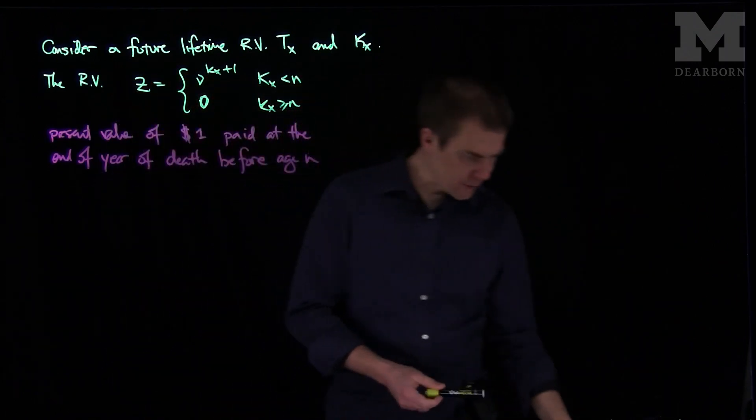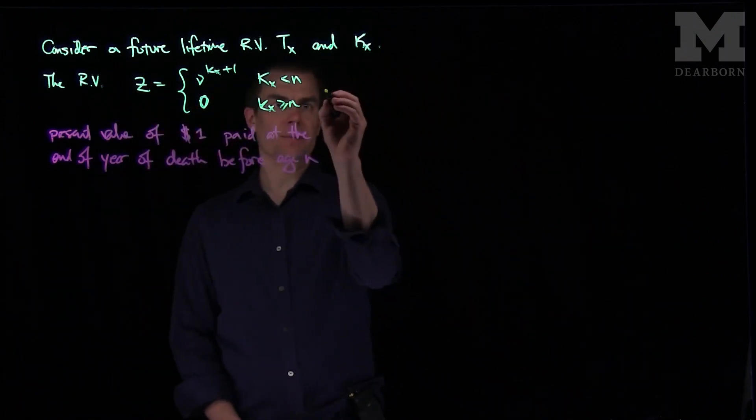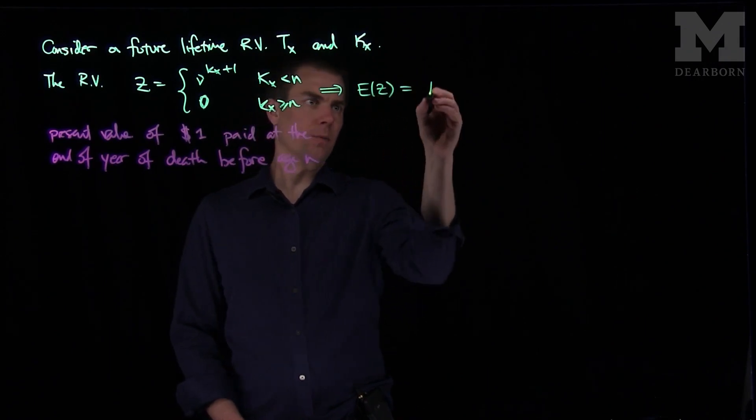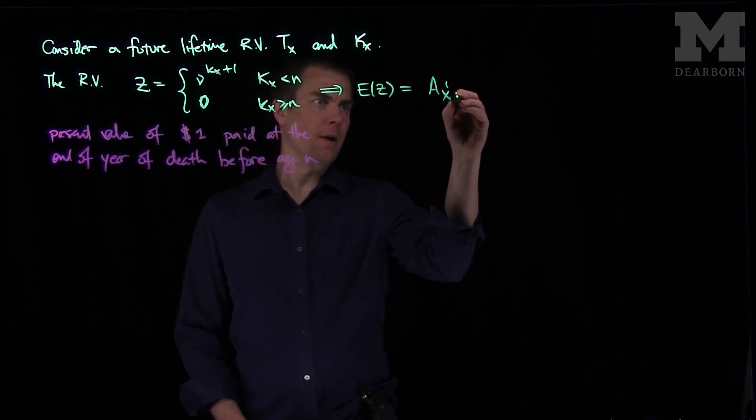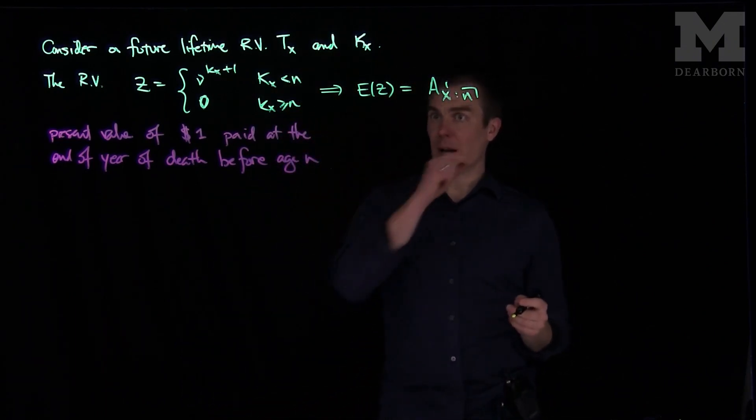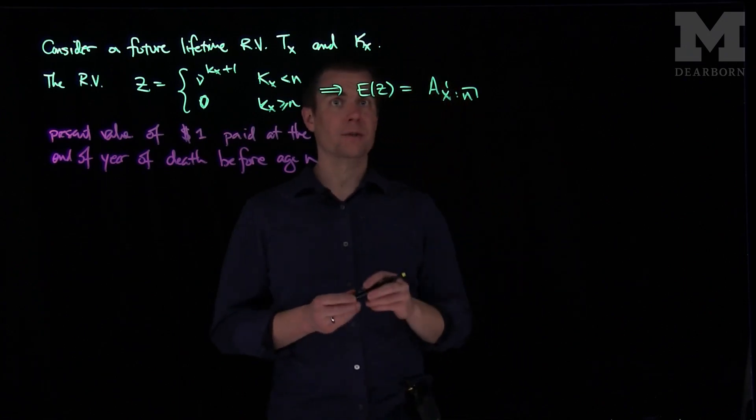And the expected value of this random variable, if we take the expected value of this, this will be Ax:n with a 1 on top. And this is the expected present value of one dollar paid at the end of year of death up to n years. And this is the term insurance present value.